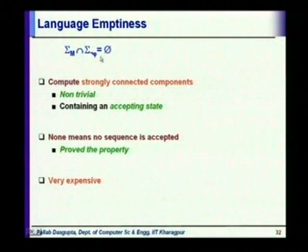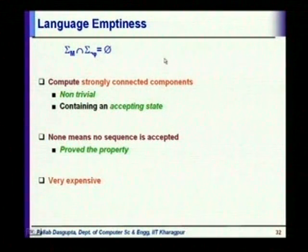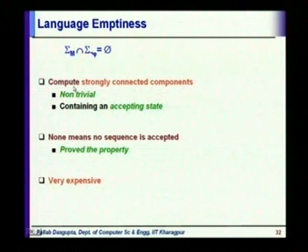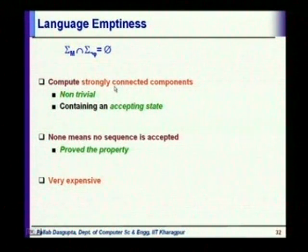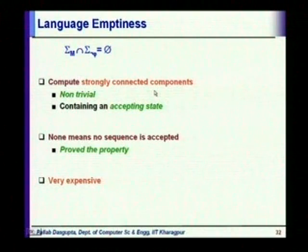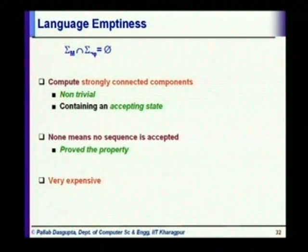The acceptance criteria is the Büchi acceptance criteria — accepting states must be visited infinitely often; at least one of the accepting states must be visited infinitely often. To check that, we first need to compute the strongly connected components in the product of the two machines. A strongly connected component is a set of states such that from each of those states you can reach each of the other states.